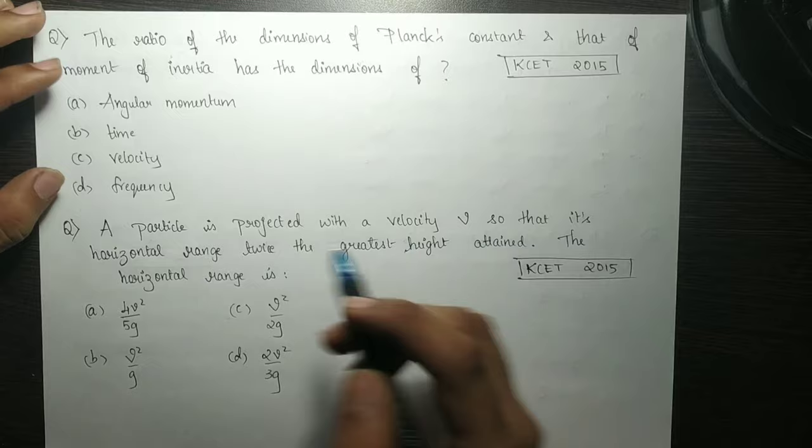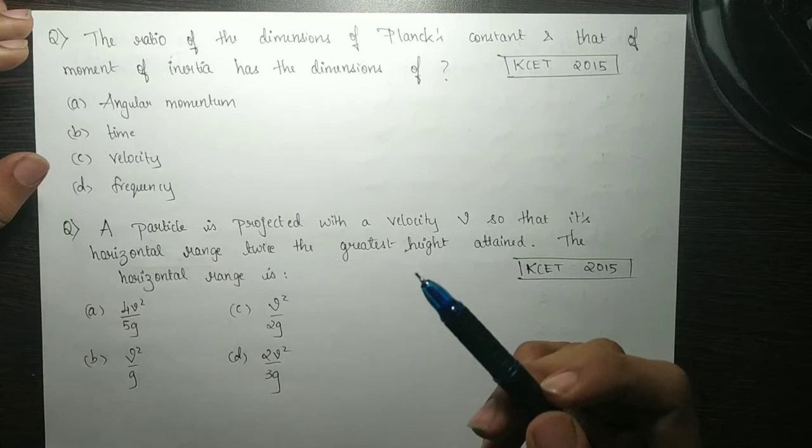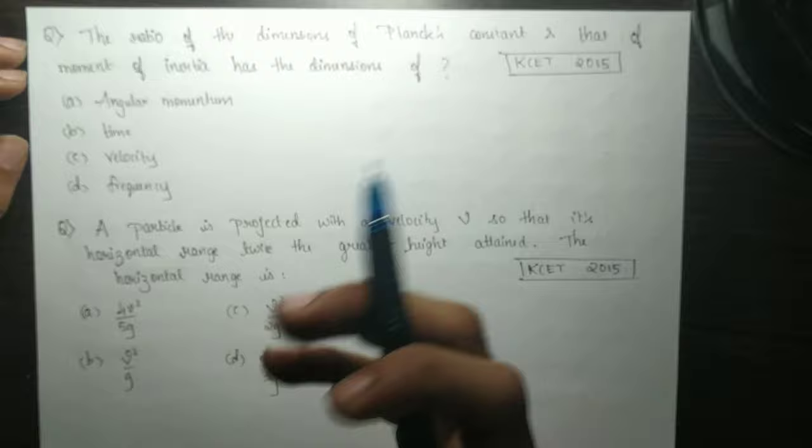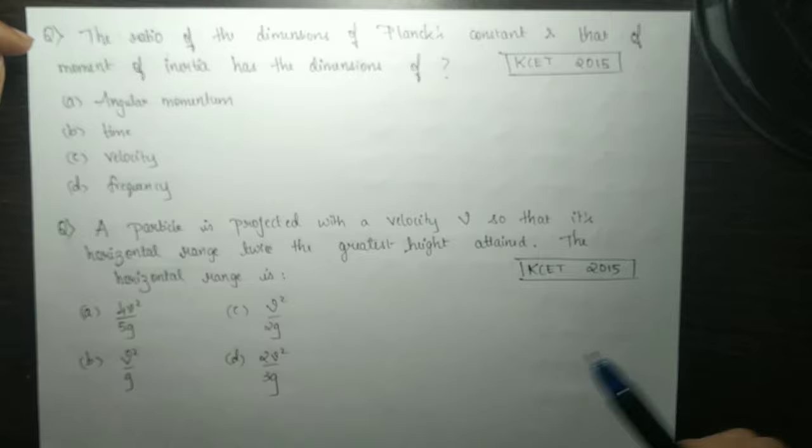The ratio of the dimensions of Planck's constant and that of moment of inertia has the dimensions of. That's why Planck's constant has a dimension, that's why moment of inertia has a dimension. So we have to think about some of the dimensions. It is hard to think about Planck's constant.